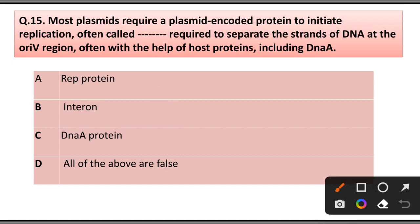Question number 15: Most plasmids require a plasmid-encoded protein to initiate replication, often called this, required to separate the strands of DNA at the ori region, often with the help of host proteins including: A) DnaA protein, B) Integron, C) DnaA protein, D) All of the above are false. Answer is option A, Rep protein.